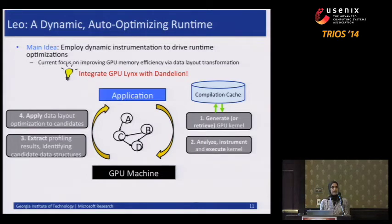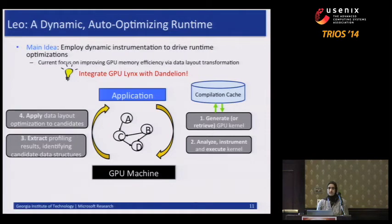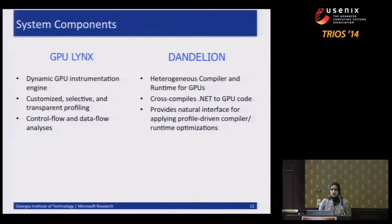My prior work was to build a dynamic instrumentation tool for GPUs called GPU Links. We also had Dandelion, a compiler runtime front-end that provided exactly what we needed to build this together. GPU Links is an instrumentation engine providing customized and selective profiling for GPU applications, and allows for control flow and data flow analysis including taint analysis.